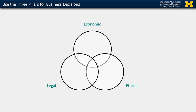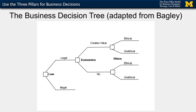Another way to think about the Harvard model is this decision tree developed by a friend of mine, Connie Bagley, who's currently at Yale but taught at Harvard Business School for several years. Under this decision tree, your first decision, represented by a box, is to ask yourself: is your decision legal or not? If it's legal, consider the economics of the decision — does it create value or not? And if it creates value, then is the decision ethical or not?